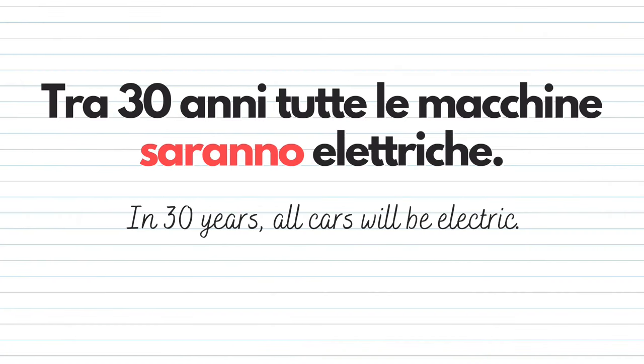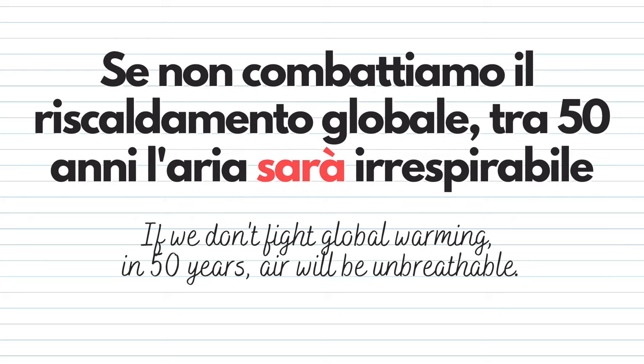Finally, we also use the future to make predictions. This is very important — in this case I cannot use the present, I will have to use the future. When making a prediction, I'm not a hundred percent sure, so the future is the perfect tense to use because it does not convey the same certainty that the present might. For example: Tra trent'anni, tutte le macchine saranno elettriche — In 30 years, all cars will be electric. Another example: Se non combattiamo il riscaldamento globale, tra cinquant'anni, l'aria sarà irrespirabile — If we don't fight global warming, in 50 years the air will be unbreathable.